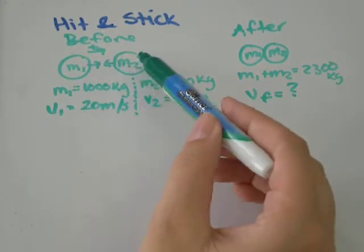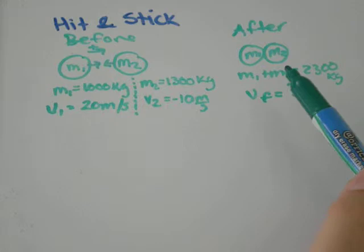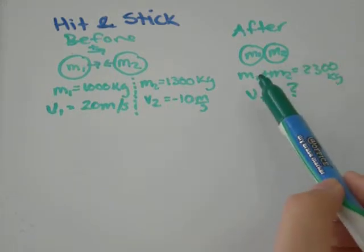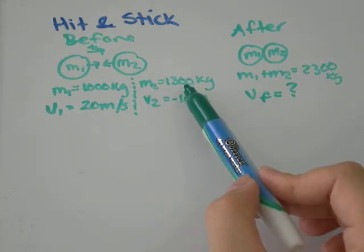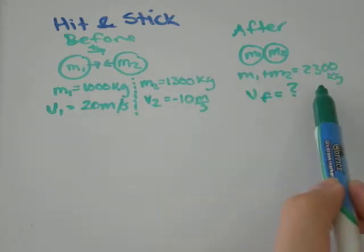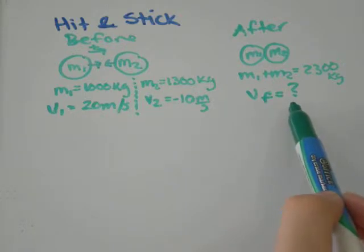So 10 meters per second in the opposite direction, going towards the left. After the impact, they're stuck together, so they have a combined mass of 1000 plus 1300 would be 2300 kilograms. And their final velocity is what we're trying to solve for.